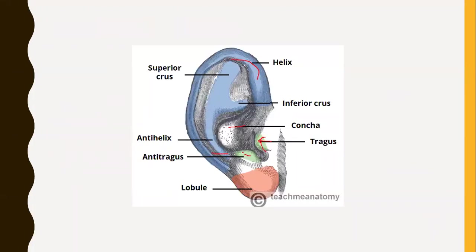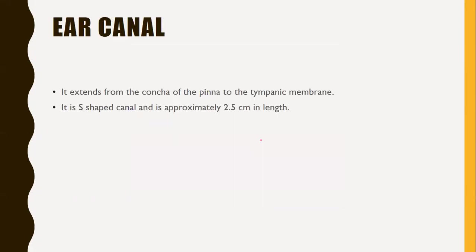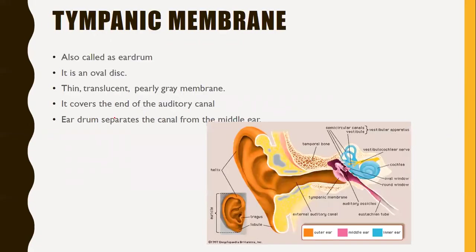Next is the ear canal, the second part of the external ear. It extends from the concave of the pinna to the tympanic membrane. The ear canal has an S-shape and its length is approximately 2.5 cm.